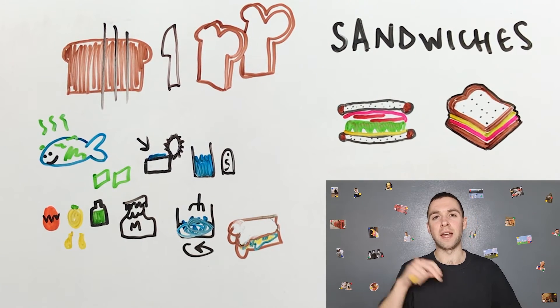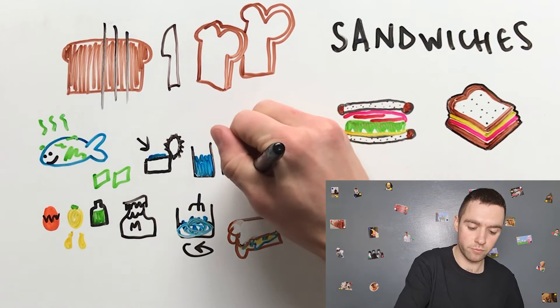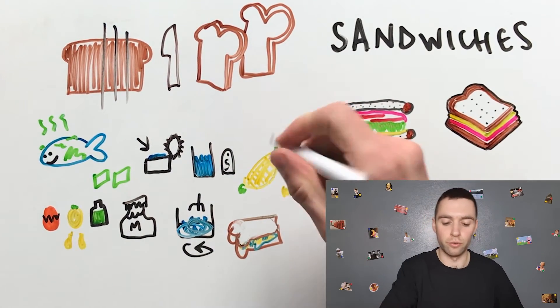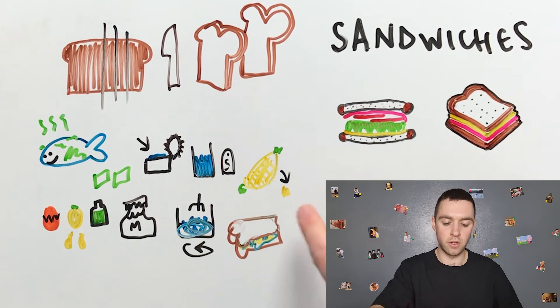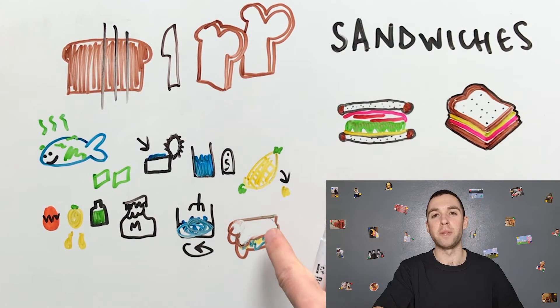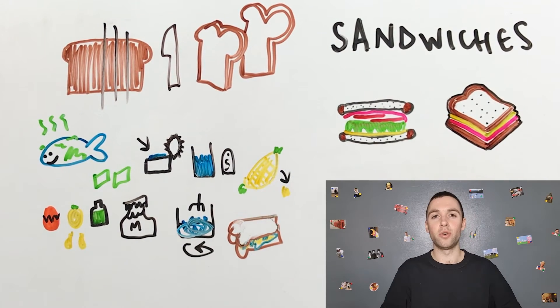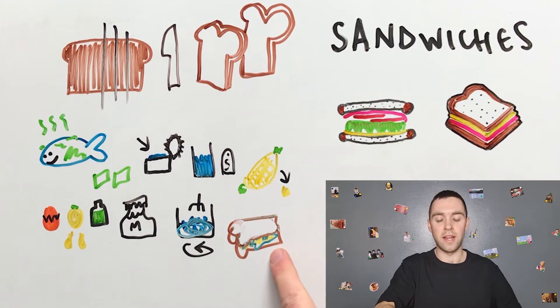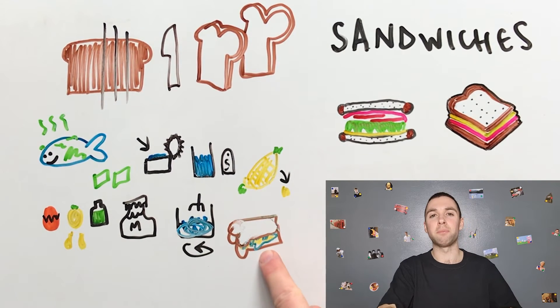Sometimes I put sweet corn, sweet corn from a corn on the cob, on my tuna mayo sandwich. Sometimes. Okay, that is how I make a tuna mayo sandwich.